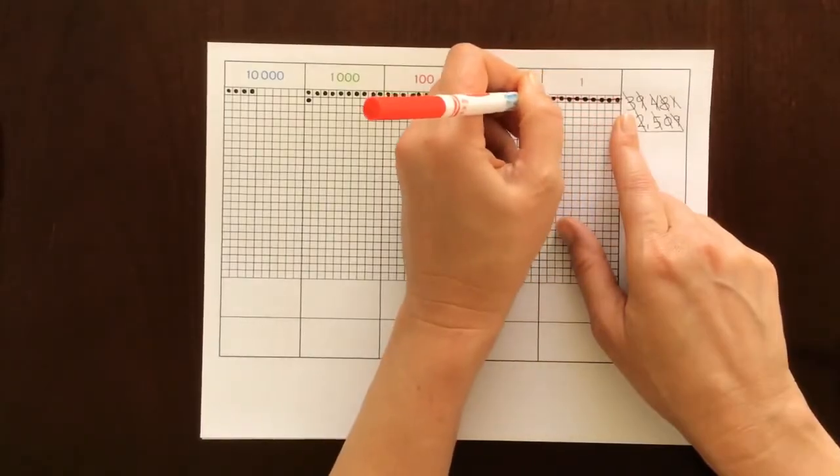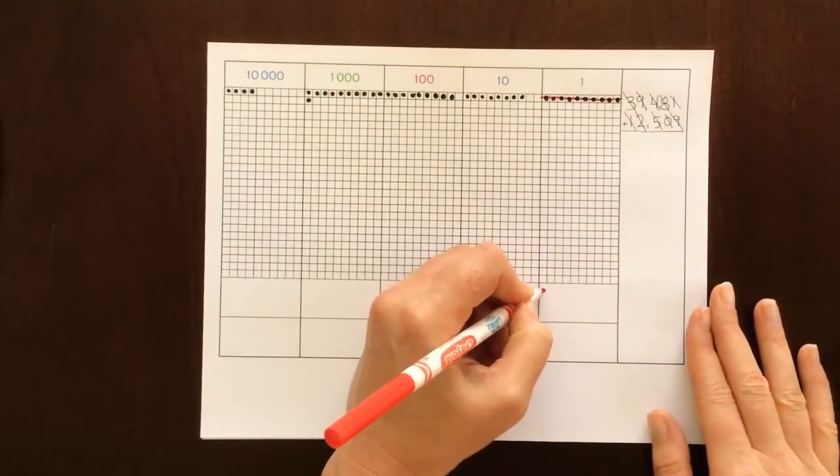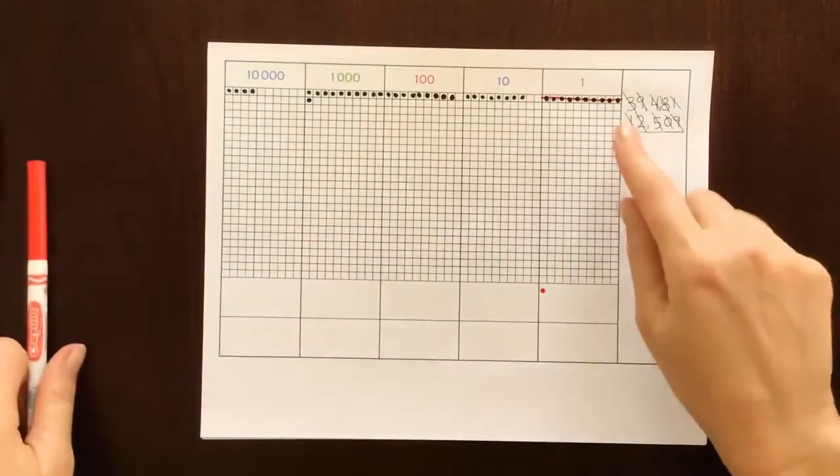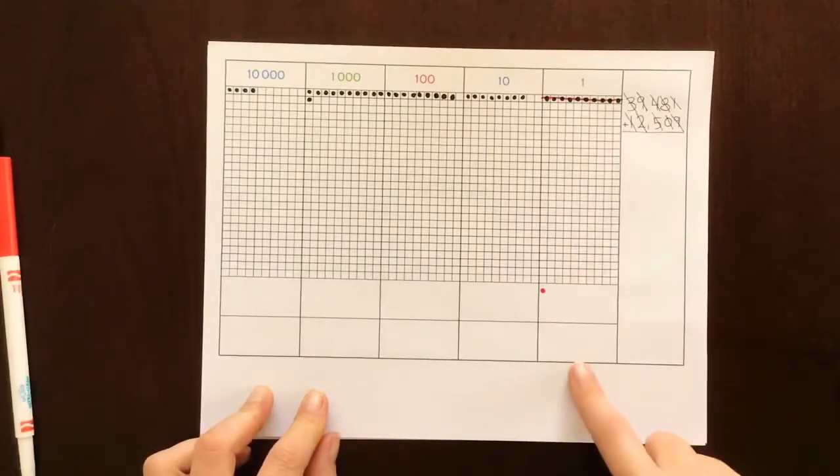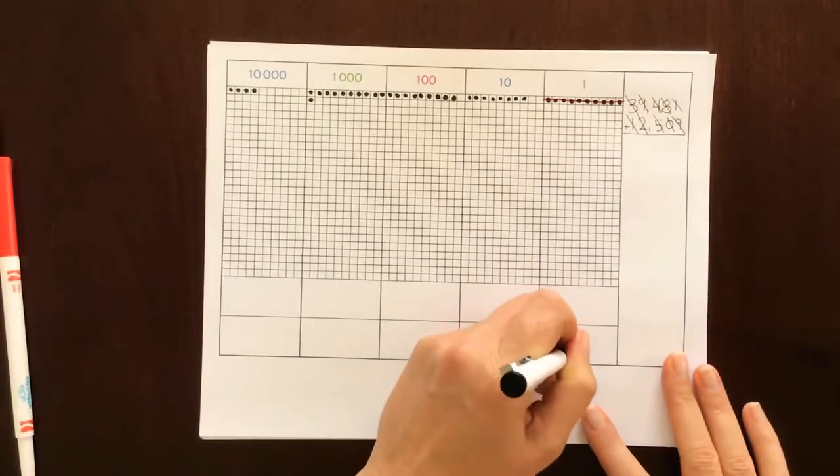So I'm going to cross that out and put a little dot here to remind me that I made an exchange. And then I don't have anything in the ones place now, so down here I'm going to put a zero.